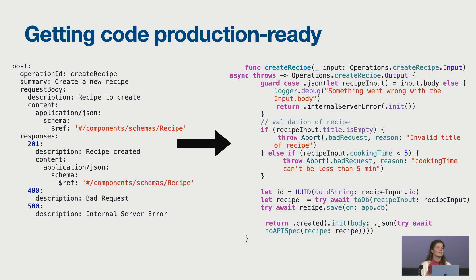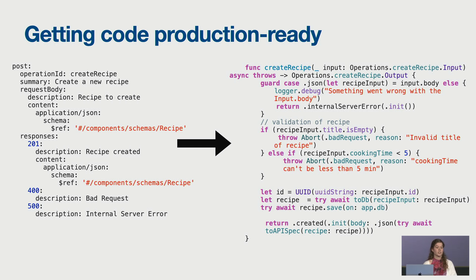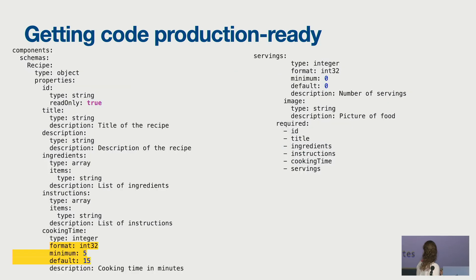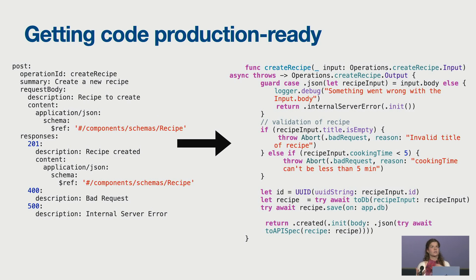The create recipe endpoint brings me to the topic of validation. I have a request body, also in the input property. However, validation has to be added manually — the Swift OpenAPI generator does not do that for you. For example, I've defined that a field has to be an integer, less than 5, with a default of 15. But the generator doesn't enforce those constraints or throw errors — you have to add your validation logic manually in your function.